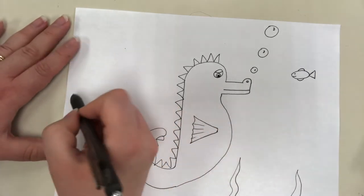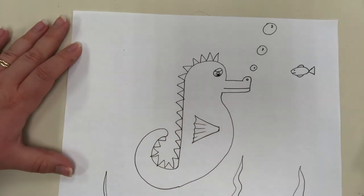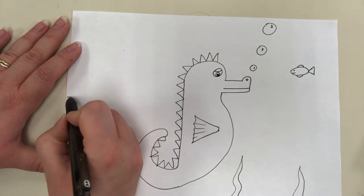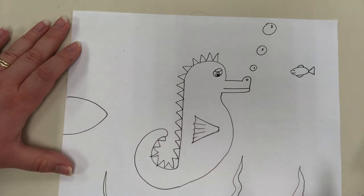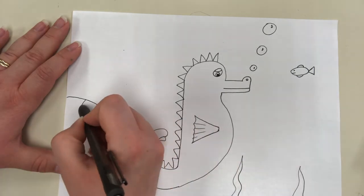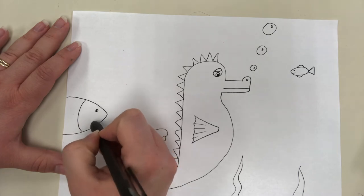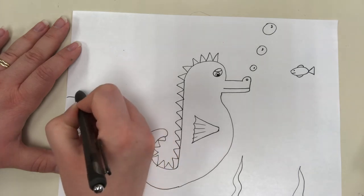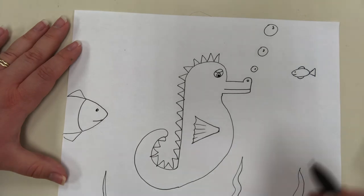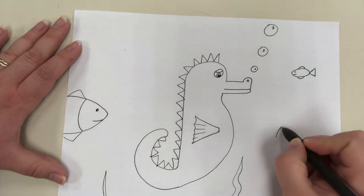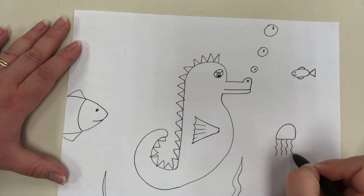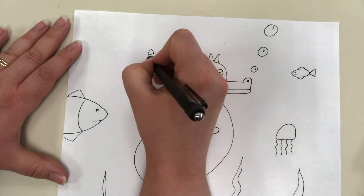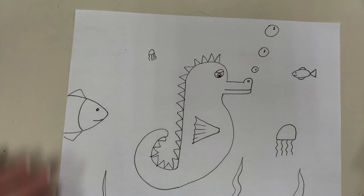And then over here, I might do a bigger fish. Make sure the camera can see what I'm doing. Maybe he's swimming towards the seahorse. Do kind of half of an eye shape, half of an oval shape. You can do jellyfish, which are like a rainbow arch shape with a flat bottom with squiggles. Maybe some are close up, maybe some are far away. You decide what you want to add.